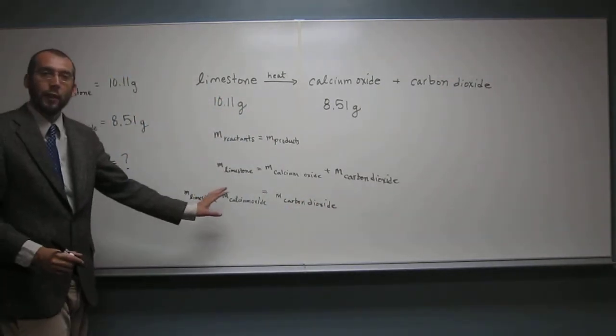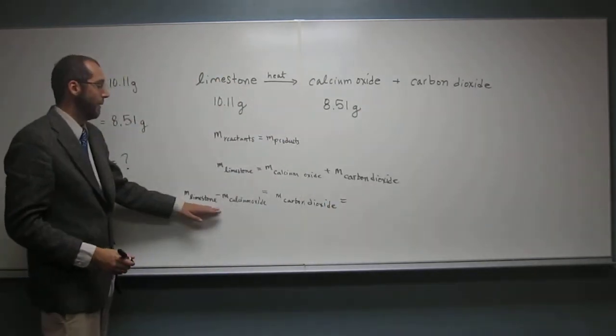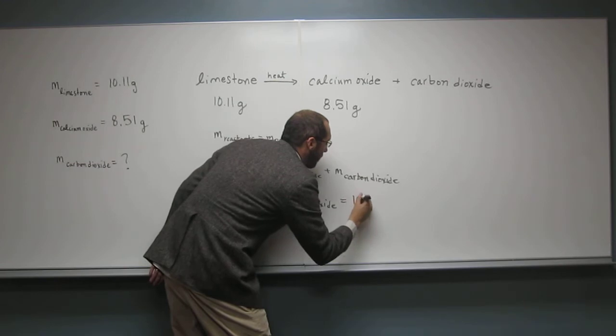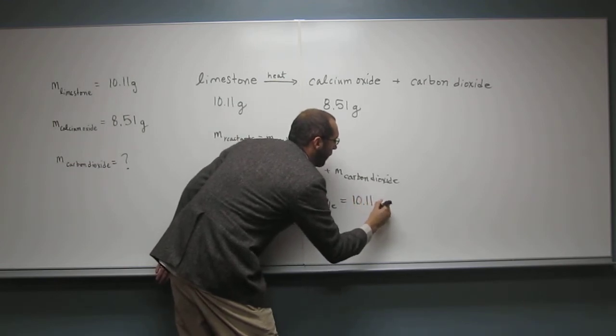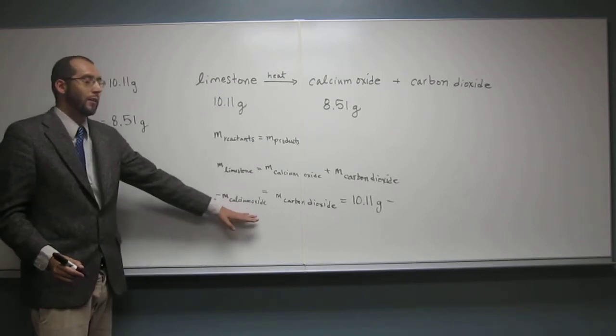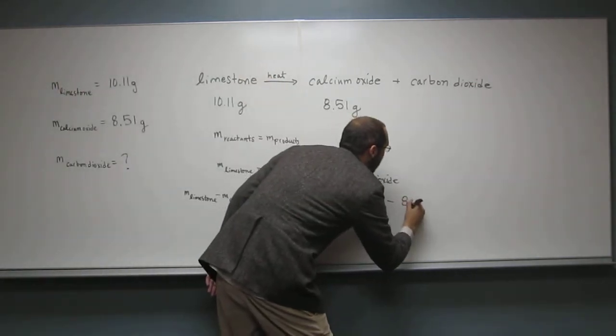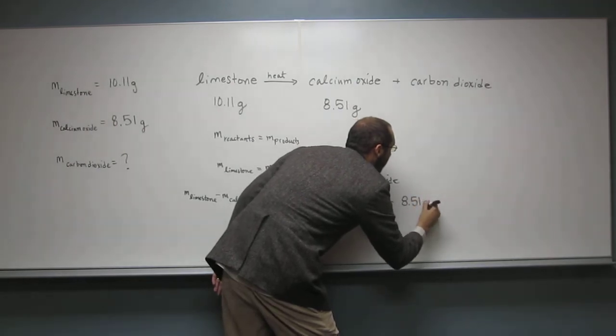Okay. So now let's just plug in numbers. Okay. So what's the mass of the limestone? 10.11 grams, remember we have to use those units, and the mass of the calcium oxide, what is that? 8.51 grams.